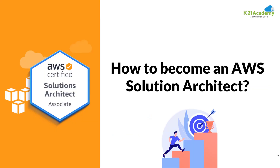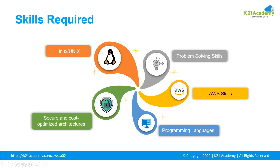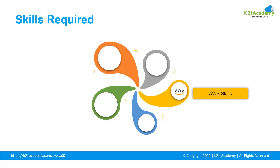Now let's understand how to become an AWS solutions architect by looking at the required skills — taken from actual job descriptions. The first skill is AWS knowledge. You should have a deep understanding of AWS concepts, AWS services, how to create an architecture, how AWS architecture works, and the best practices in AWS.